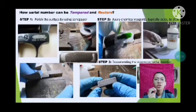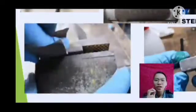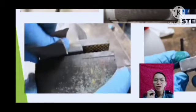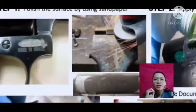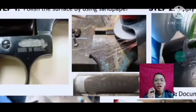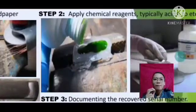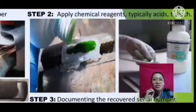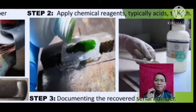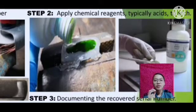How can a serial number be tampered with and restored? Step one is to polish the surface using sandpaper. However, using sandpaper is quite tedious, so some use a welder machine to more quickly smooth the surface, especially when dealing with physical evidence. Step two is to apply a chemical — typically acid — to etch the surface.